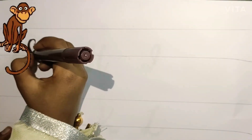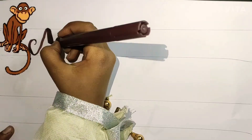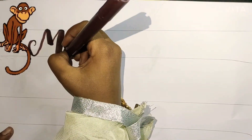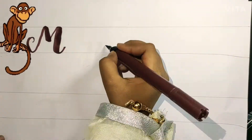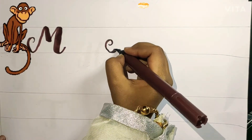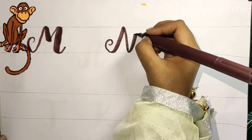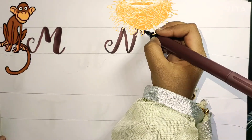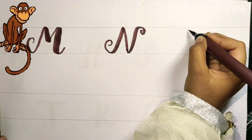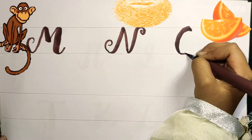M is for Monkey. N is for Nest. O is for Orange.